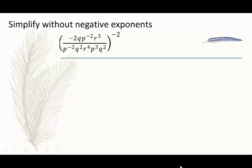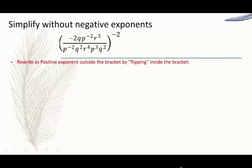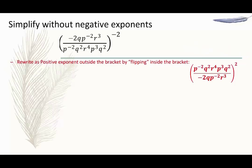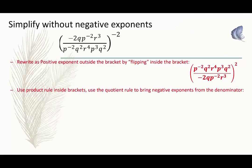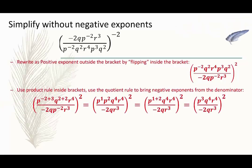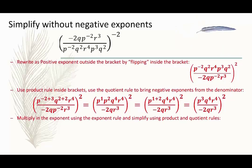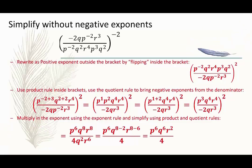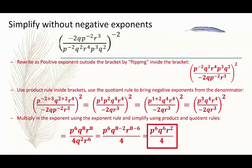Reviewing what we just did: we rewrote as a positive exponent outside the bracket by flipping inside the bracket. Then we used the product rule inside the brackets and the quotient rule to bring the negative exponents from the denominator. Finally, we multiplied in the exponents using the exponent rule and simplified using product and quotient rules to get our final answer: p to the 6th, q to the 6th, r squared over 4.